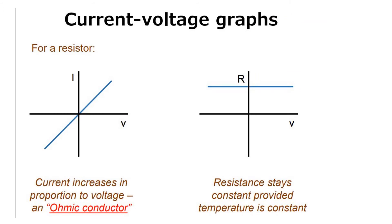We are now going to look at the current-voltage graphs for different components. For a resistor, which is a fixed value resistor, you can see we've got a straight line which passes through the origin, plotting I against V. Current increases in proportion to voltage. We call this an ohmic conductor. A fixed value resistor or a piece of metal wire would follow this relationship, any conductor as long as it's at constant temperature. If we plot resistance against potential difference we'd see a constant value, a straight horizontal line.